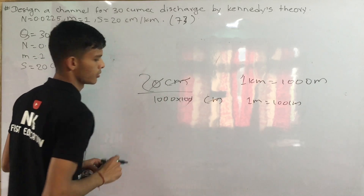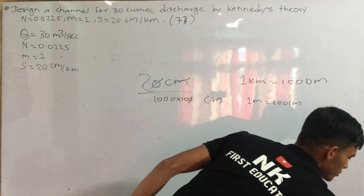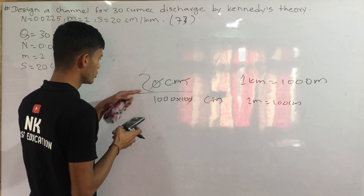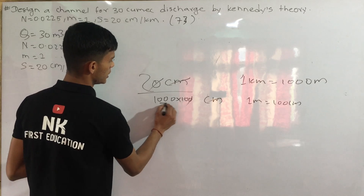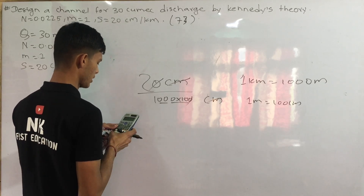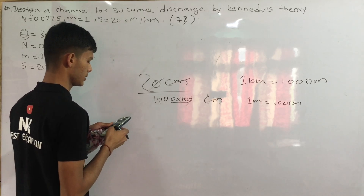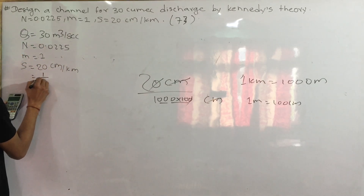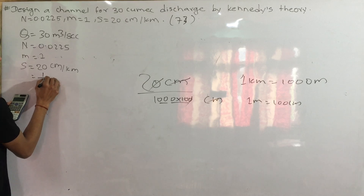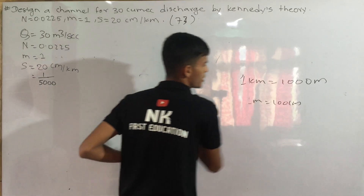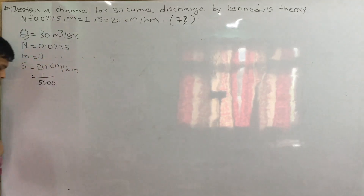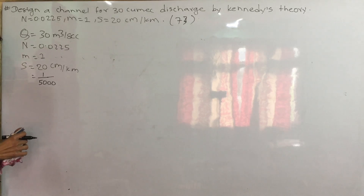This is 0. In this case, I will do a calculation. For 2, it is 1 by 5000. The slope is 1 by 5000.